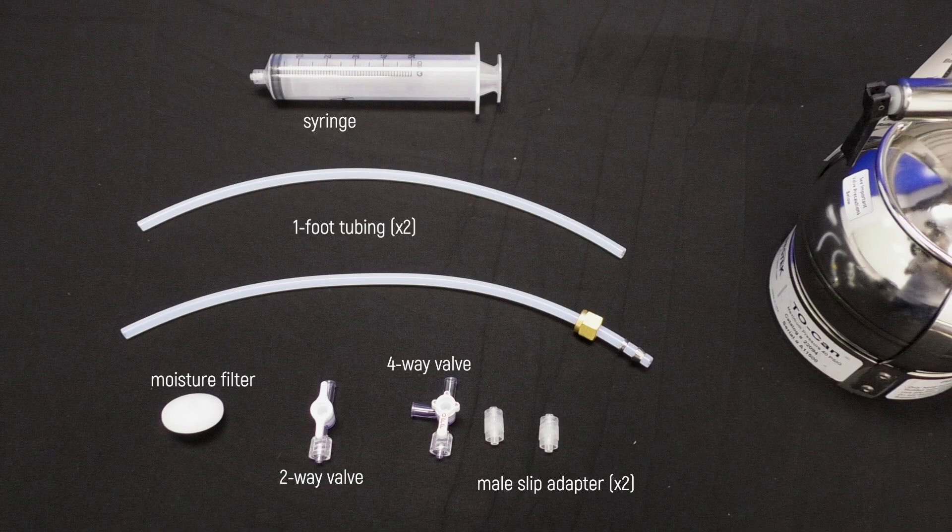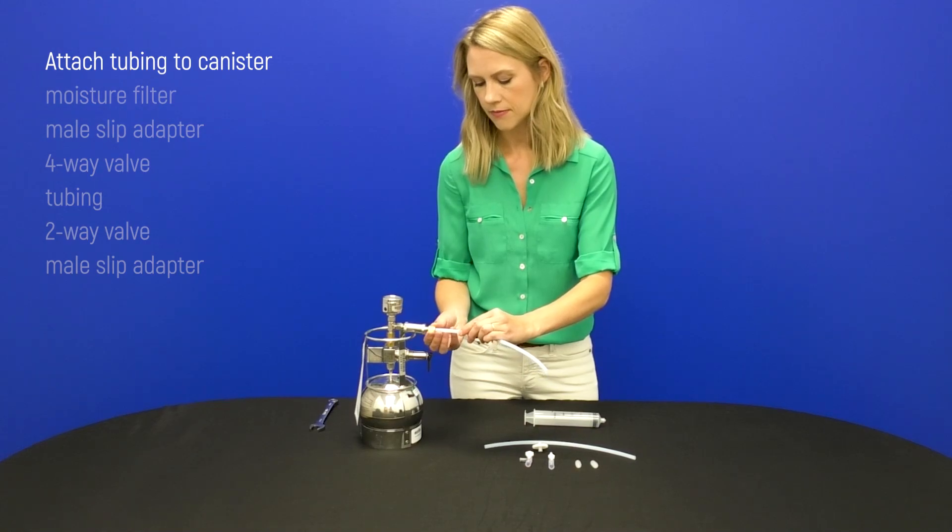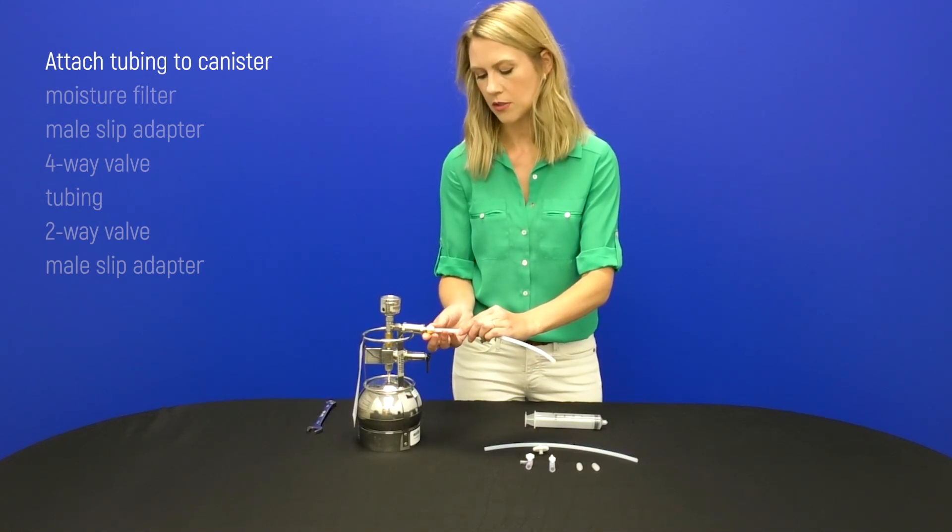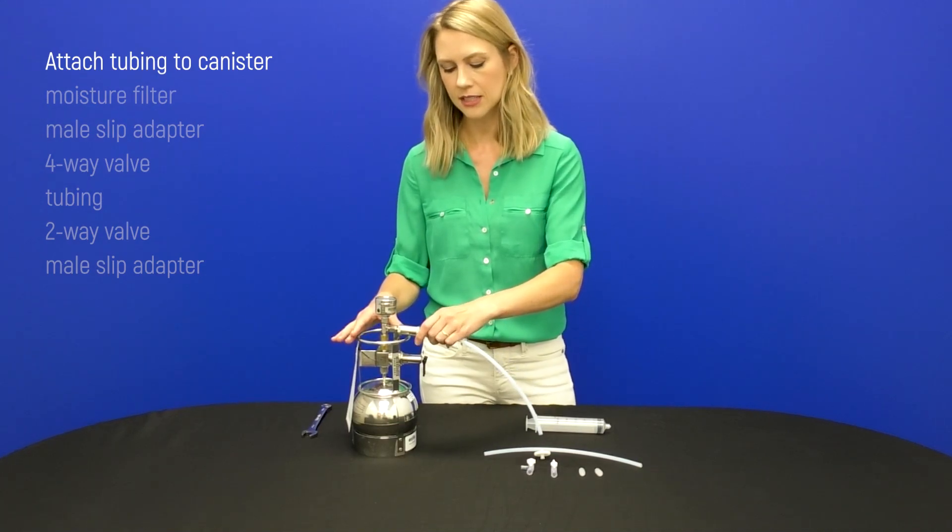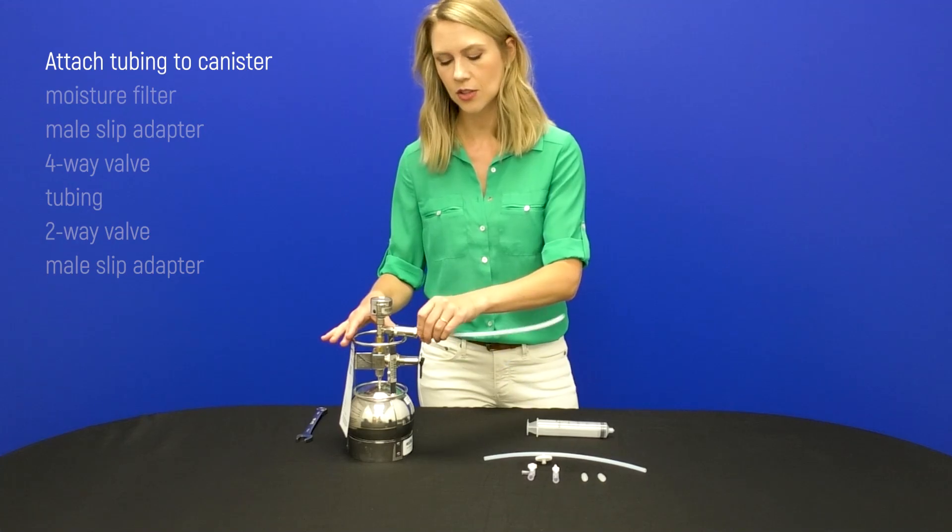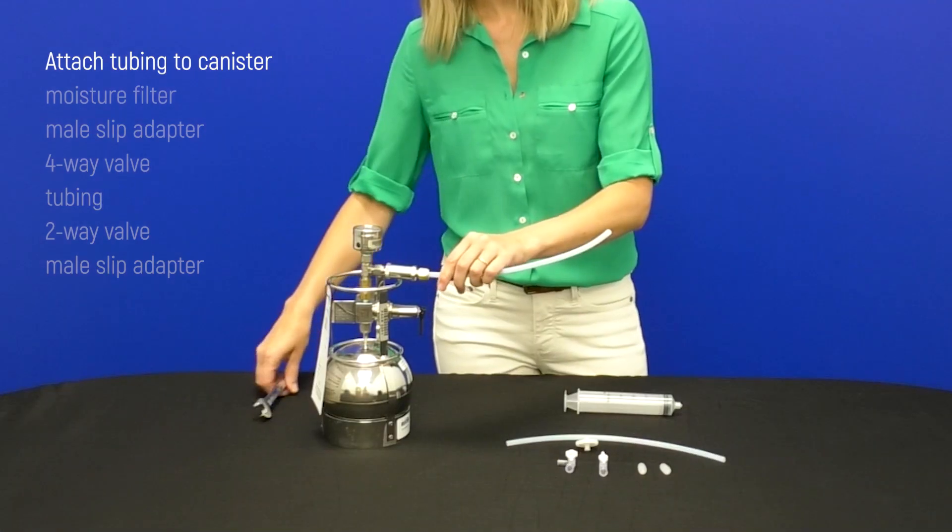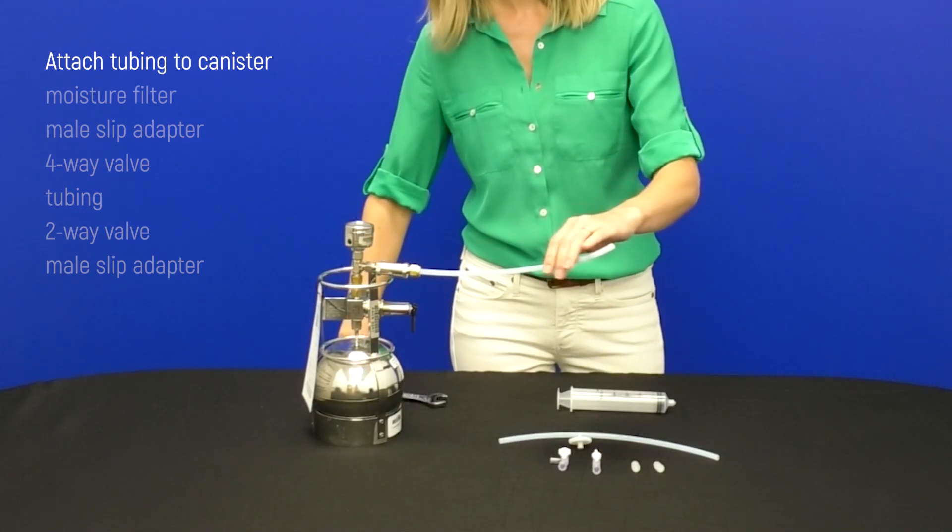You'll start off by attaching the tubing to the canister using the fittings and ferrules. You'll want to get it started with your fingers. If it doesn't seat right like this, you want to loosen it up and reseat it to make sure it threads on easily so you don't accidentally strip the connection. Then tighten up with your 9-16 inch wrench.